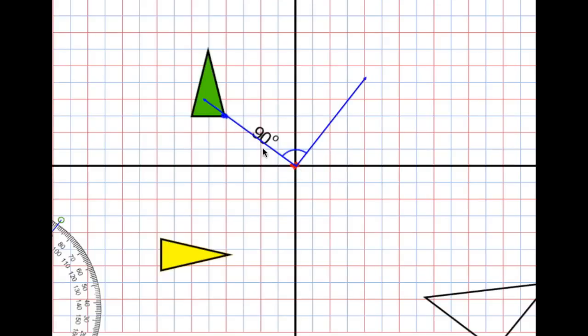What I need to make sure that I do is the distance that this line is from my rotation point to the point on my shape—it has to be the same over here.